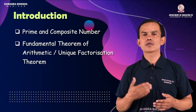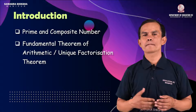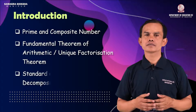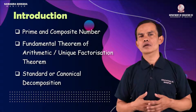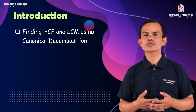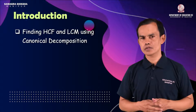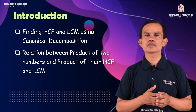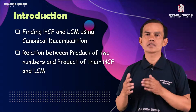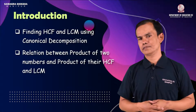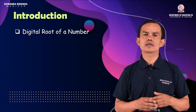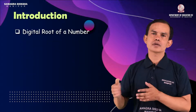We will cover the Fundamental Theorem of Arithmetic, also known as the unique factorization theorem, standard or canonical decomposition, finding HCF and LCM using canonical decomposition, and the relation between the product of two numbers and the product of their HCF and LCM. Digital roots will also be used with composite numbers.